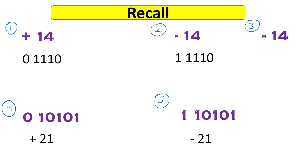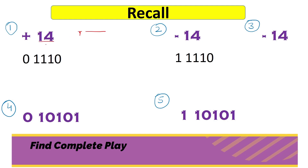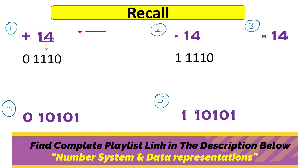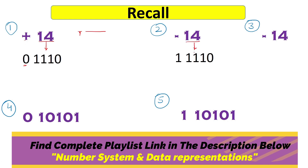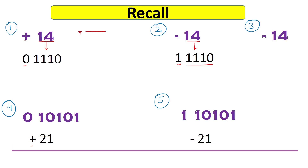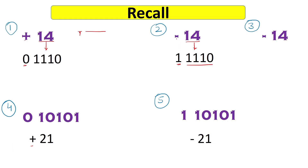Let's start with a quick recall of how to express a given number in signed magnitude representation. In signed magnitude, the MSB is reserved for the sign and the remaining bits represent the magnitude. For plus 14, the magnitude is 14, expressed as 1110, and the plus sign is represented by 0. So 0 tells me this is a positive number. For minus 14, the magnitude bits are the same and the minus sign is represented by 1, telling me the number is negative.